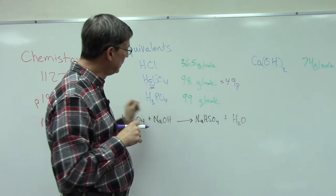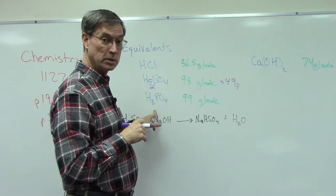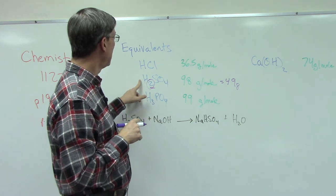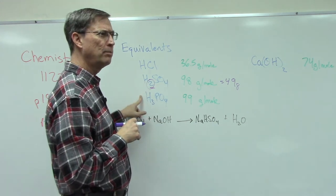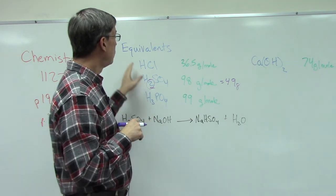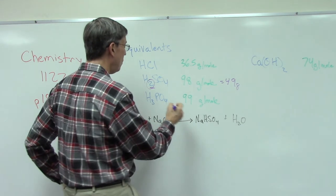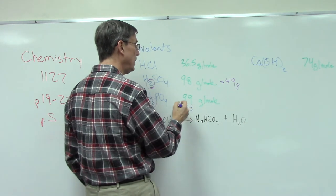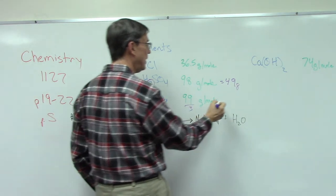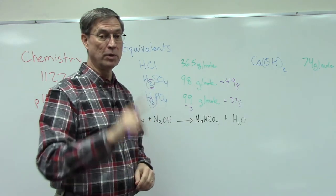H3PO4, notice that when it completely reacts in the reaction, it gives off three hydrogens. So this is a triprotic acid. It gives off three protons, three hydrogens, and so the equivalent means you take this and divide by how many hydrogens it produces when it's in a reaction. So I only need 33 grams of H3PO4 to get one mole of hydrogen.